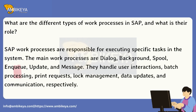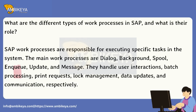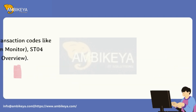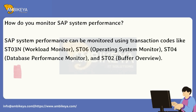What are the different types of work processes in SAP and what is their role? SAP work processes are responsible for executing specific tasks in the system. The main work processes are dialogue, background, spool, enqueue, update, and message. They handle user interactions, batch processing, print requests, lock management, data updates, and communication, respectively.